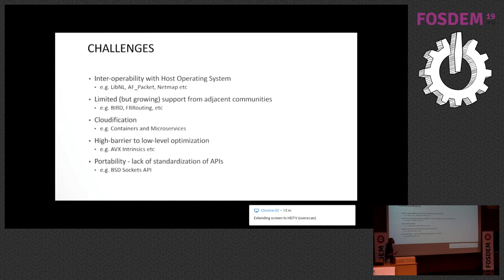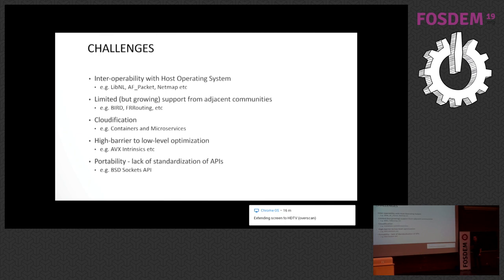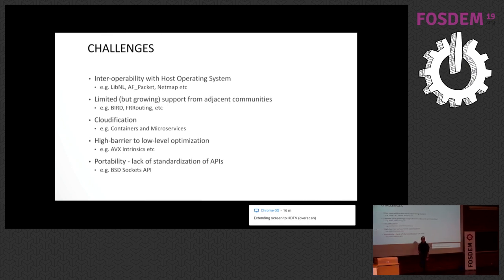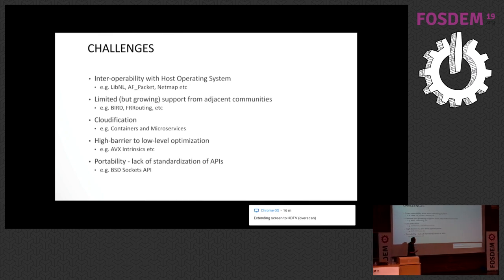On to challenges. User space networking is somewhat of an island — it doesn't interact well with kernel space networking, which is unfortunate. When you run IP link, you don't see the user space networking interface. When you run IP route or IP address, you can't manipulate the user space network stack. The tool chain you use to manage kernel space networking is not compatible with the tool chain for user space networking, and that causes user experience difficulties. There's also a high barrier to entry — achieving those millions of packets per second requires understanding microprocessor design very well. You don't just get the performance out of the box; it takes a bit of work.